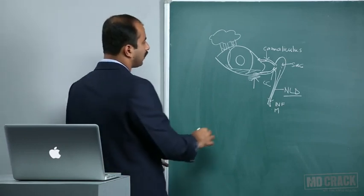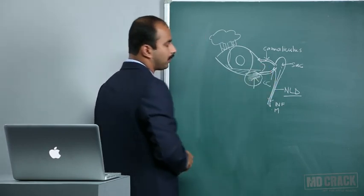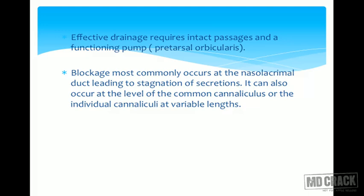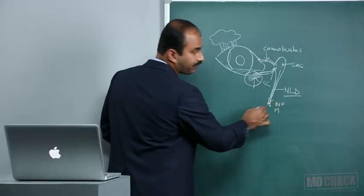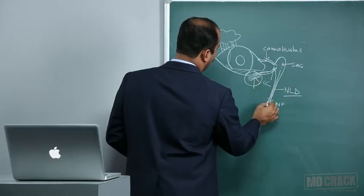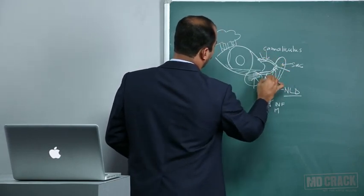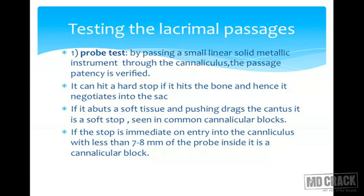Blockage most commonly occurs at the level of the nasolacrimal duct inferiorly, leading to stagnation and overflow. Secretions can get infected, leading to inflammation of the lacrimal sac called dacryocystitis. Obstruction can also occur at the level of the common canaliculus and individual canaliculi. Testing the lacrimal passages is essential to identify the site of obstruction and facilitate treatment.